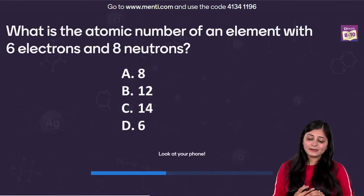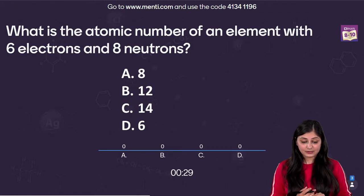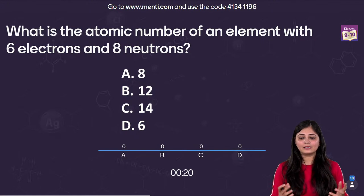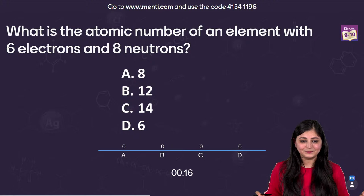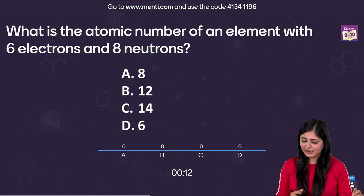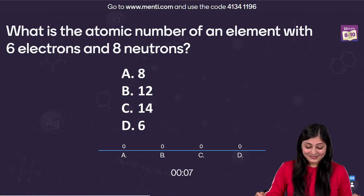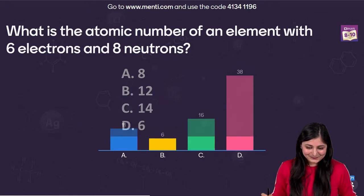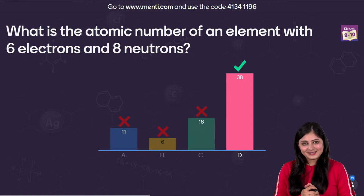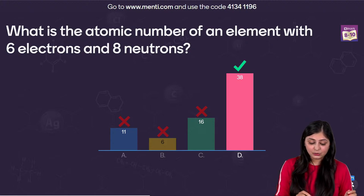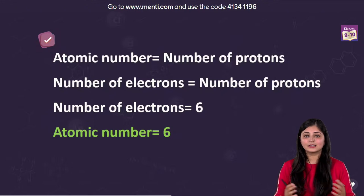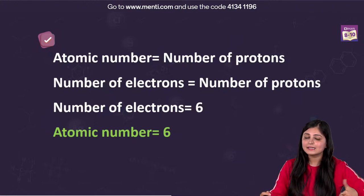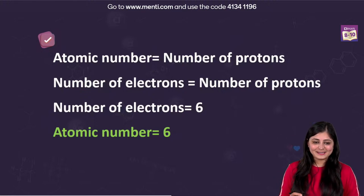Next question: what is the atomic number of an element with 6 electrons and 8 neutrons? One fundamental idea to apply — if you've done that you'll know the answer in a fraction of a second. I was getting a mix of answers but most of you got it right. Atomic number is the number of protons, and for a neutral atom the number of electrons equals the number of protons. So if electrons are 6, protons are also 6, giving atomic number 6.